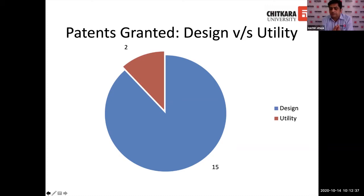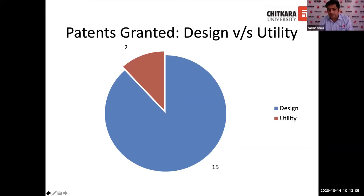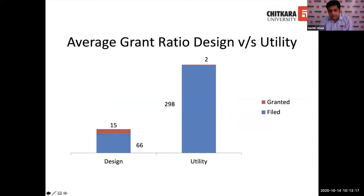The rate of acceptance for getting a design granted is much higher than for a utility patent. We filed 66 design patents and 15 were granted, whereas we filed 298 utility patents and only two have been granted till date. That is the key message of this lecture — when filing and getting a grant for a design is easier, we should proceed more towards filing designs.